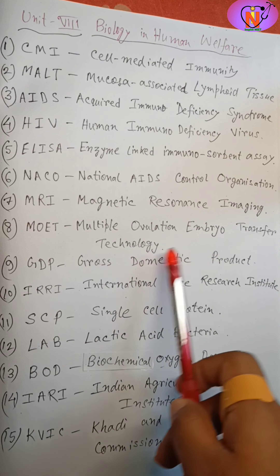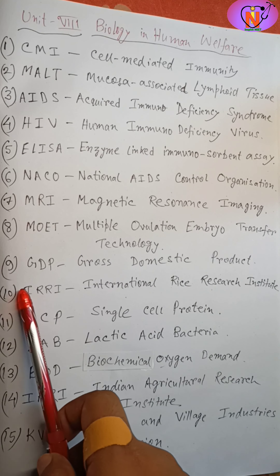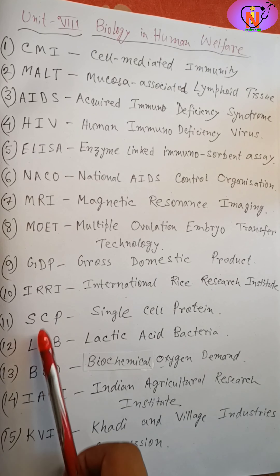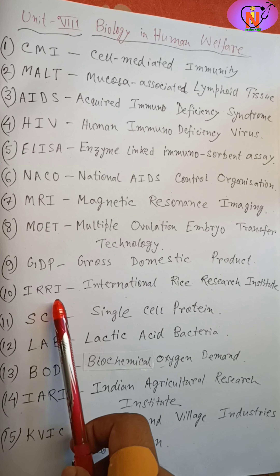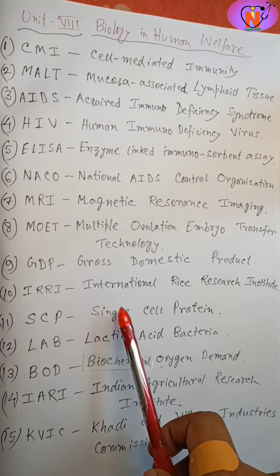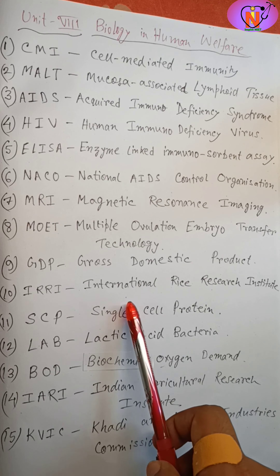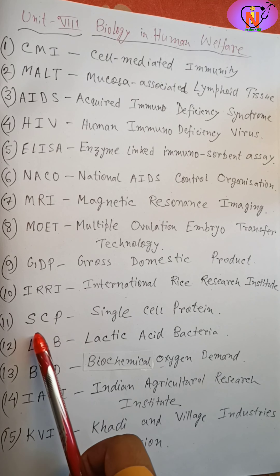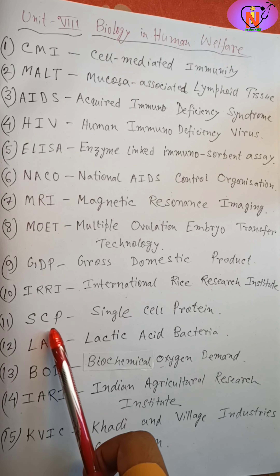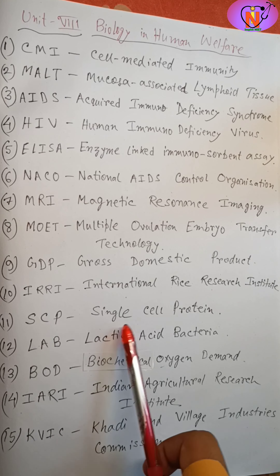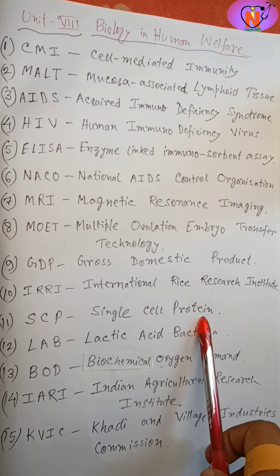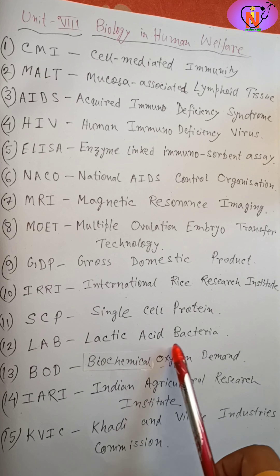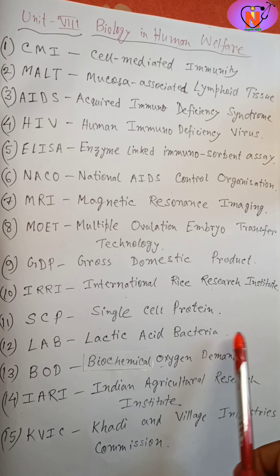GDP: Gross Domestic Product. IRRI: International Rice Research Institute. SCP: Single Cell Protein. LAB: Lactic Acid Bacteria.